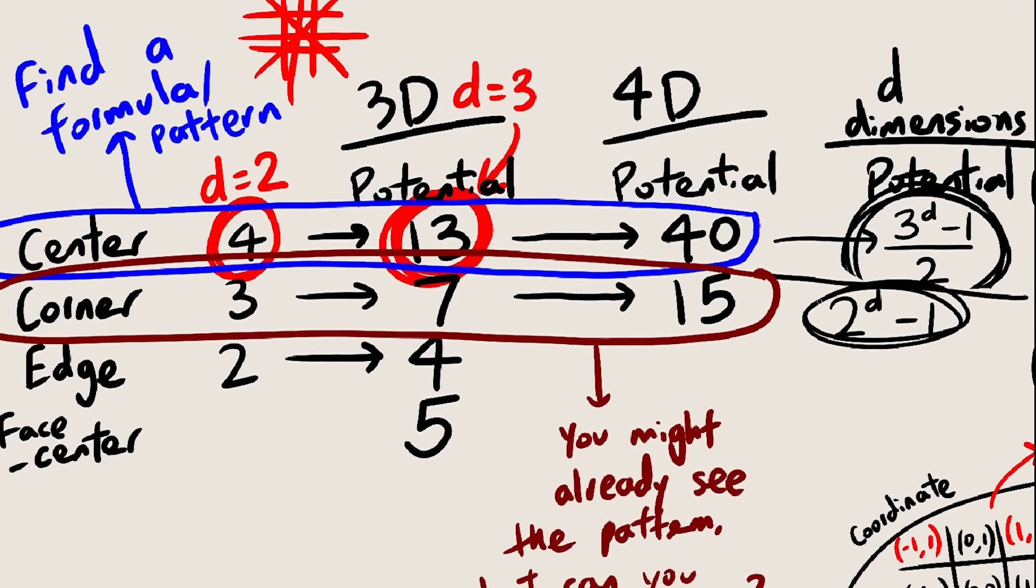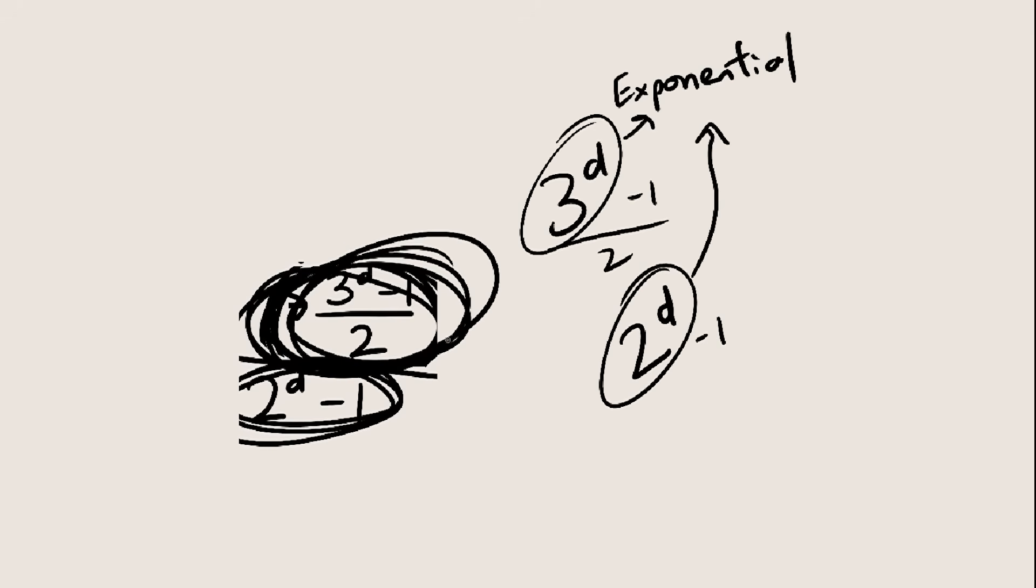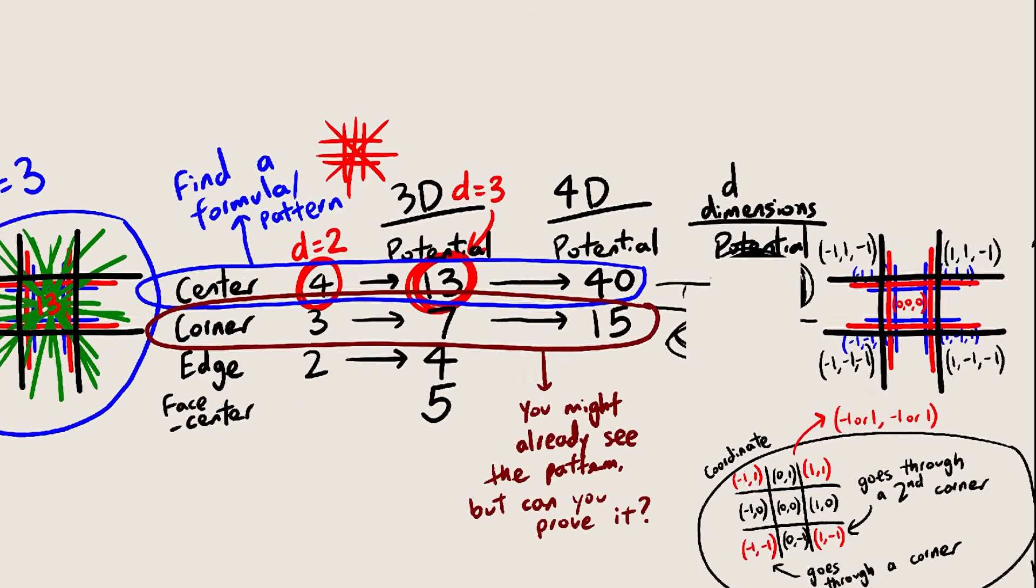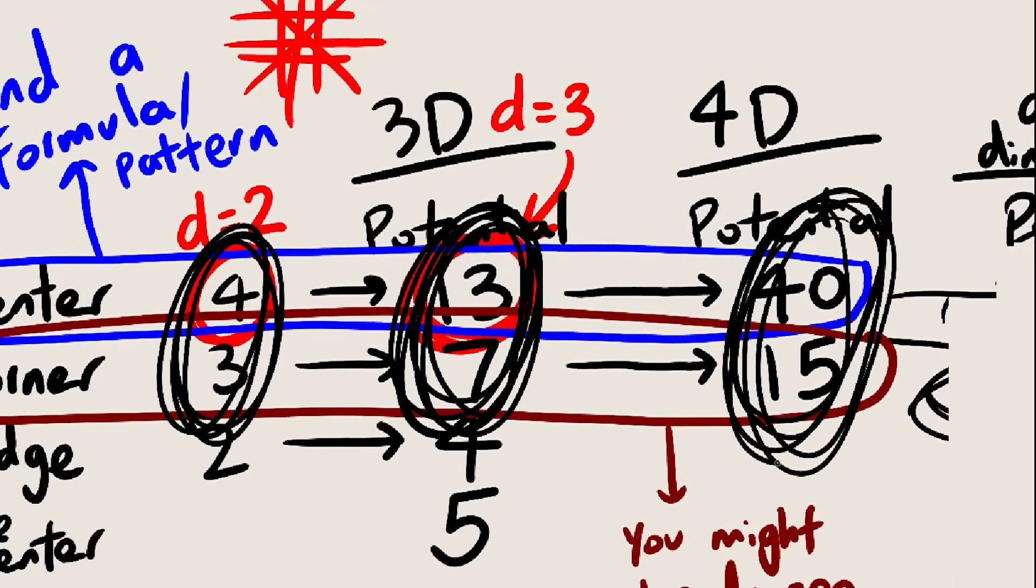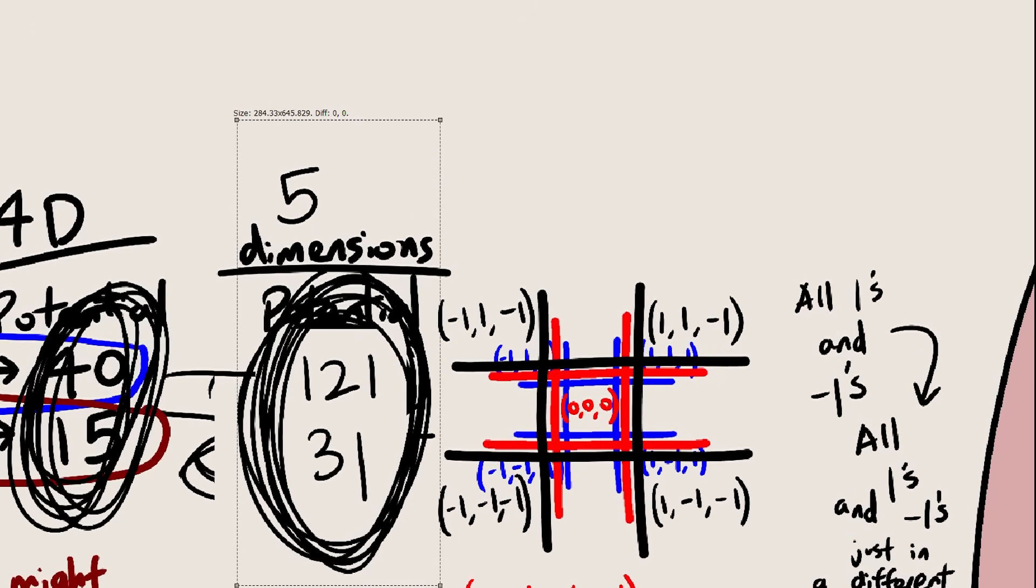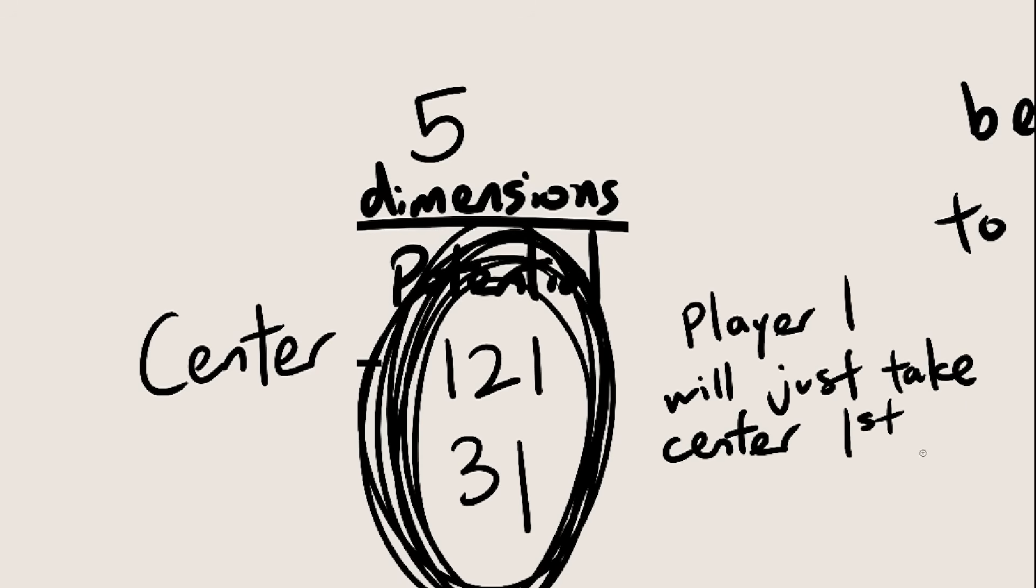Alright, we have our two general formulas. If you look closely, you'll notice that both formulas grow exponentially, but this one grows faster because it's 3 to the power of D and not 2 to the power of D. This means the discrepancy between these two values will get bigger and bigger as the number of dimensions increases. So, for very high-dimensional games of tic-tac-toe, the center becomes very, very valuable, and the winner of the game is essentially whoever has control of the center.